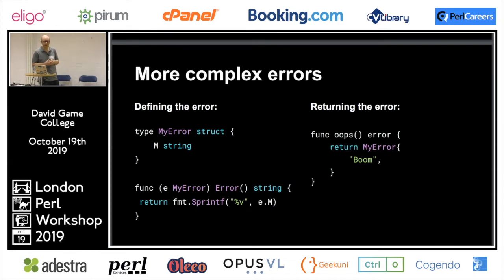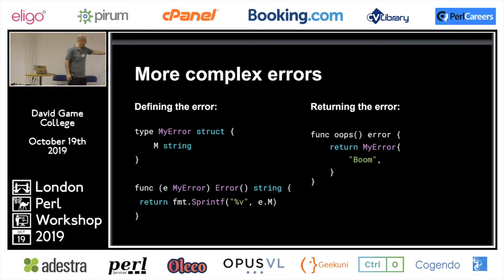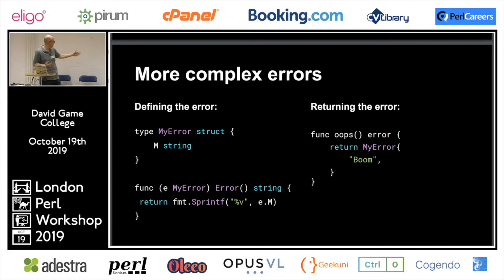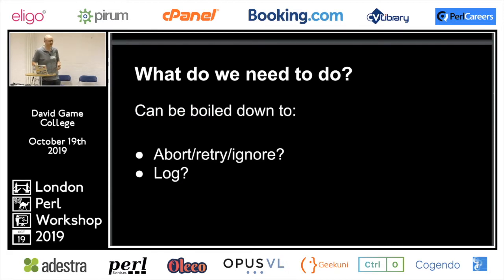In Go you can construct arbitrary error types. Rather than regular OO classes, they allow you to define a type that follows an interface — as long as you have a method called 'error' that returns a string, you are an error type. When you construct that struct and return it, it's accepted as an error because it implements the error interface. It's very lightweight and easy to do your own types. I haven't done a corresponding Perl example because there's more than one way to do it and you're at a Perl conference so I'll assume you've got that level of knowledge.